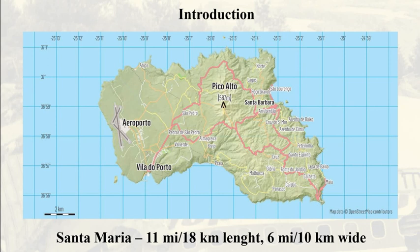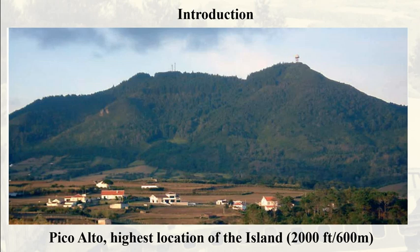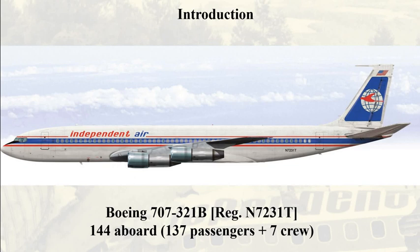A layout of Santa Maria. It is a relatively small island with a length of around 11 miles and a population of around 5,000 people. A view of Pico Alto, where the plane crashed — it is the highest location of the island, standing around 2,000 feet tall.